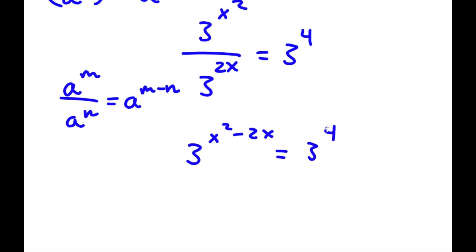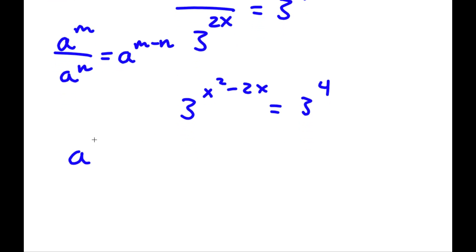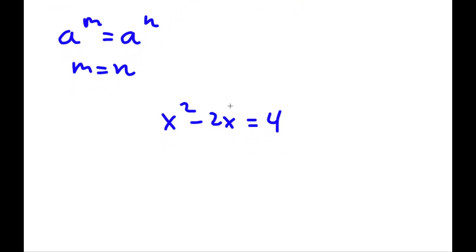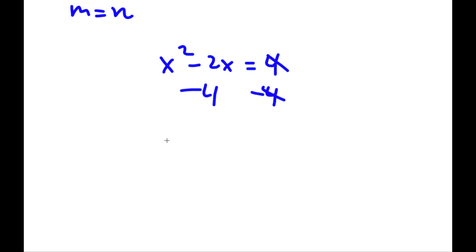This is equal to 3 to the power of 4. Now if I have something in the form a to the power of m equal to a to the power of n, then m is equal to n. So in this case x squared minus 2x is equal to 4. I'm going to subtract 4 from both sides, so I have x squared minus 2x minus 4 is equal to 0.